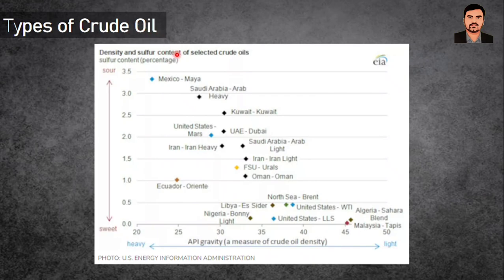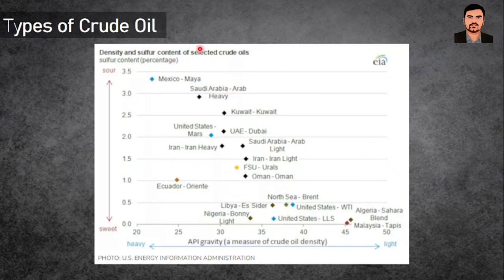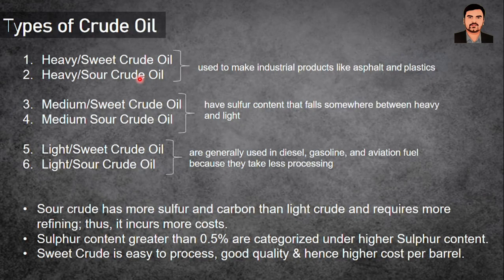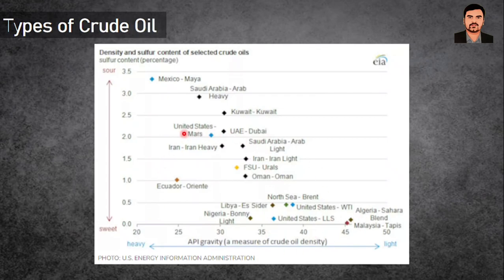Based on density and sulfur content, various crude oils are sourced from different locations: Kuwait, Saudi Arabia, Mexico, United States, Dubai, Iran, Ecuador, and the North Sea. On the chart, going up is sour, going down is sweet, going left is heavy, and going right is light. These various geographies correspond to the six types of crudes previously defined.